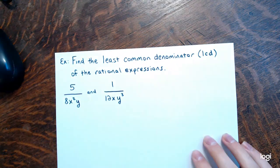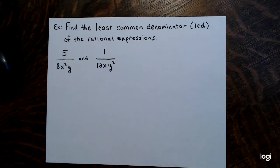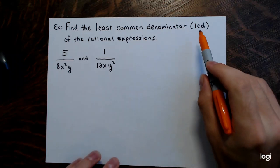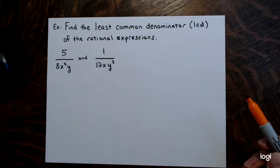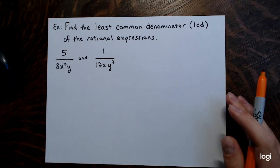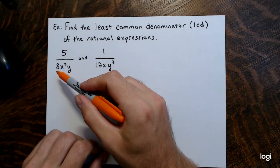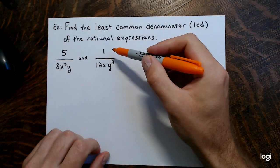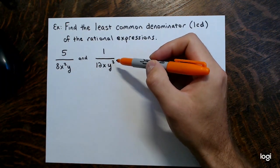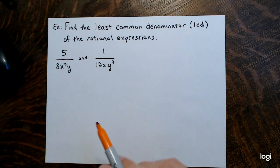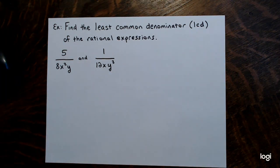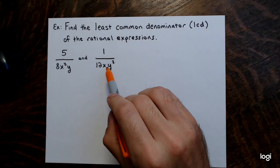The first example asks us to find the least common denominator, or LCD, of two rational expressions: 5 divided by 8x squared y, and 1 divided by 12xy cubed. In this example, all the polynomials in the numerators and denominators are a single term — they are all monomials.